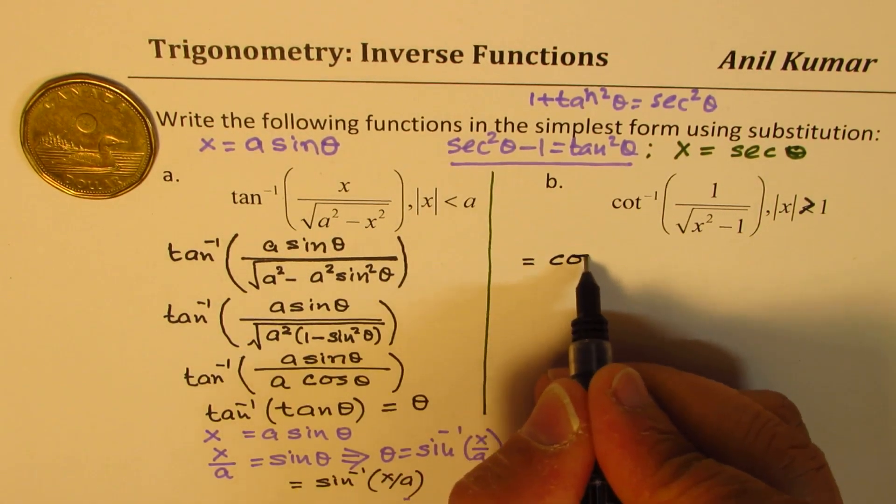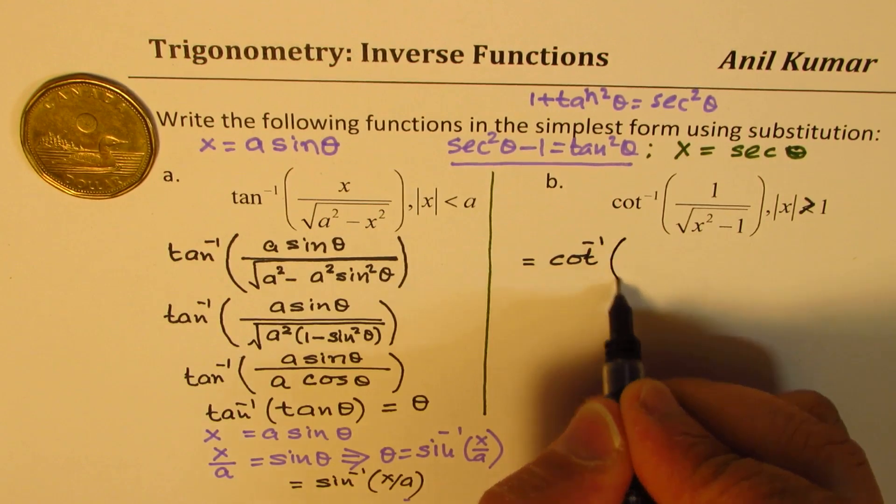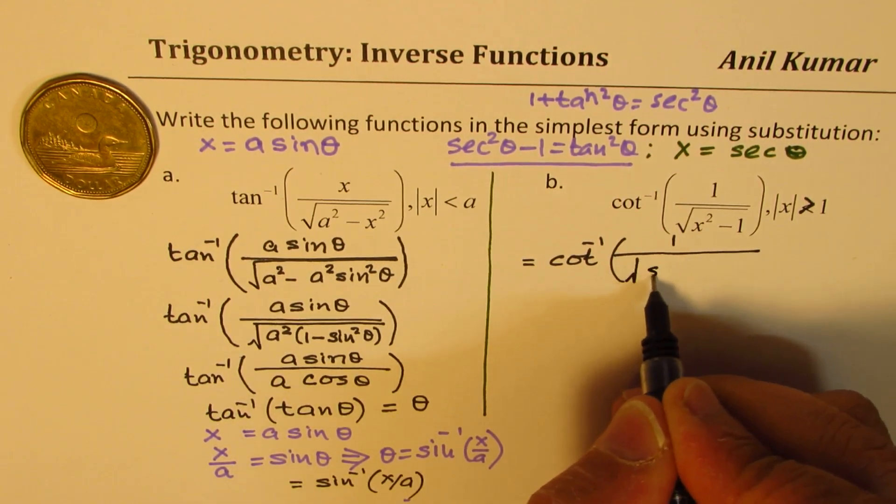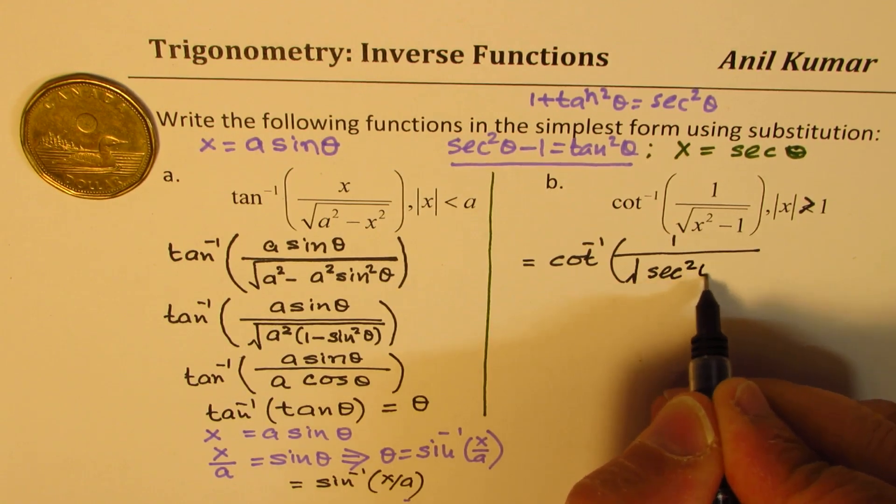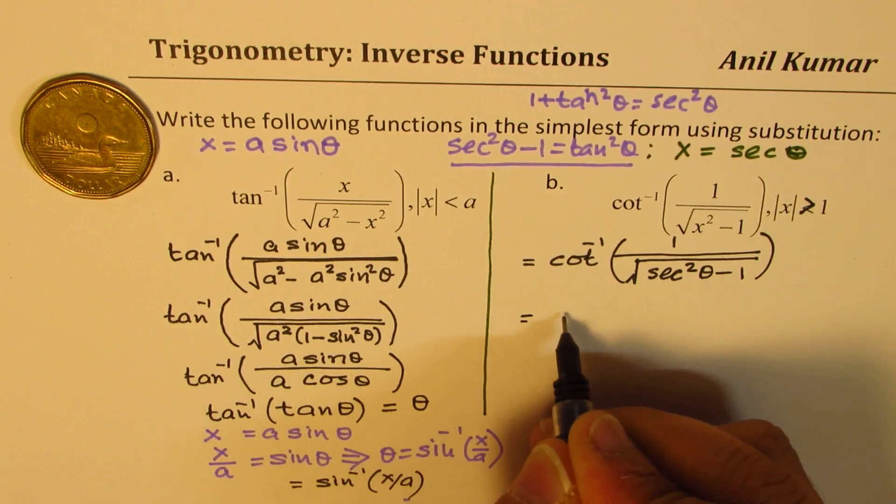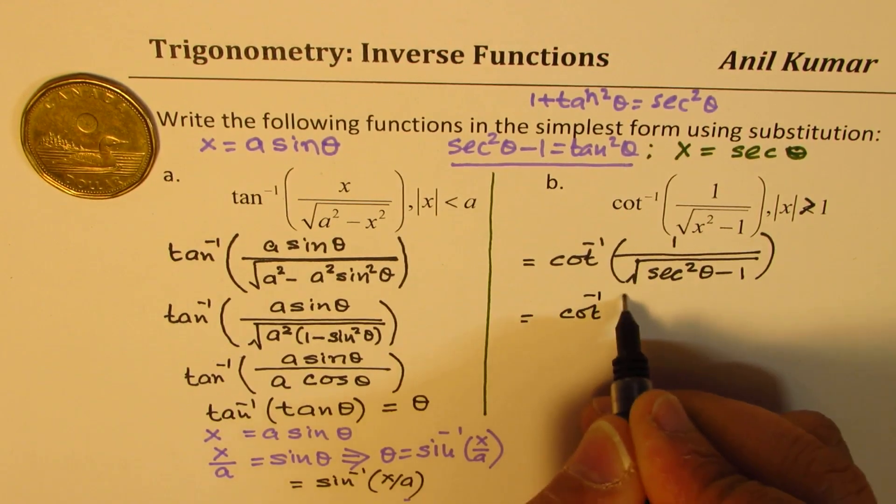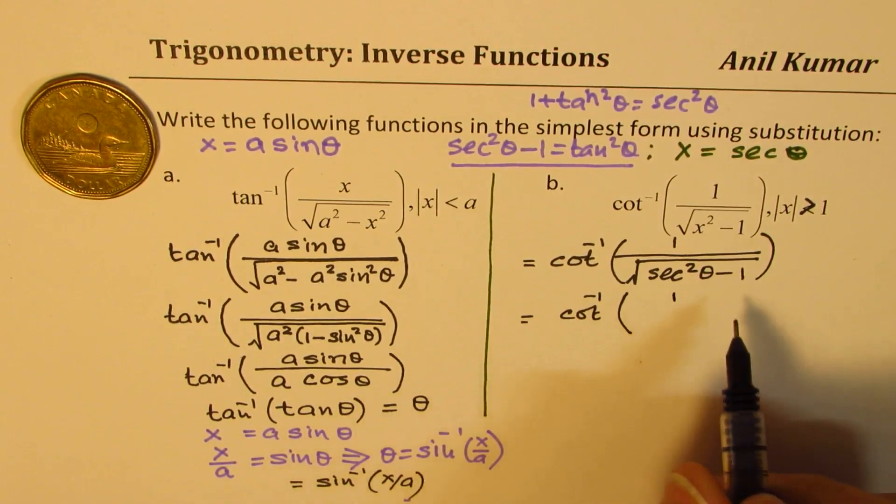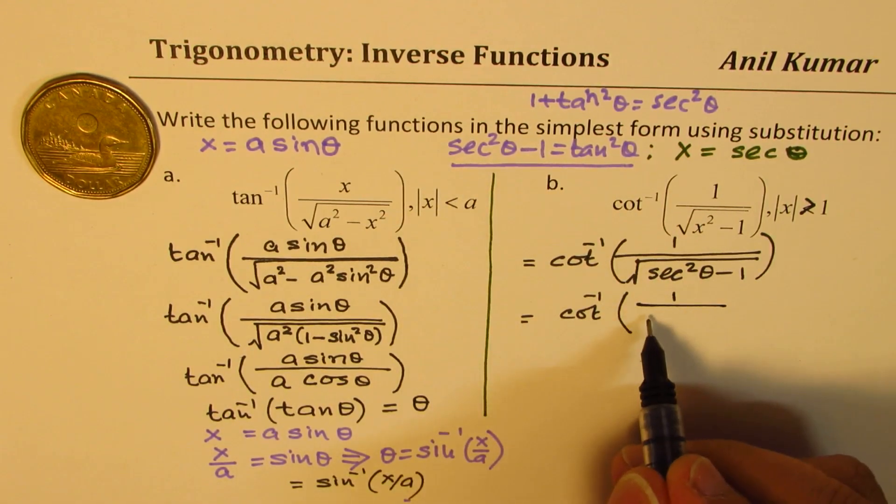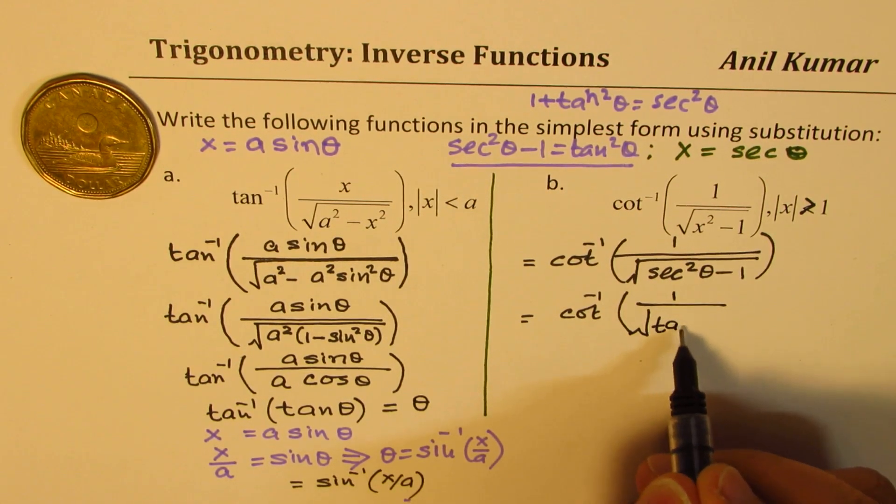So what we could write this as cot inverse of 1 over square root of secant square theta minus 1. Now, so we get cot inverse of 1 over what? Secant square theta minus 1 is tan square theta. Which is square root of tan square theta.